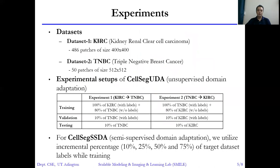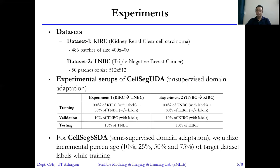In our experiments, we use two public datasets: one from kidney renal clear cell carcinoma and another from triple negative breast cancer. For our unsupervised domain adaptation experiment, we assume no labels from the target domain during training. In the semi-supervised domain adaptation case, we assume that some percentage of labels are available from the target domain.